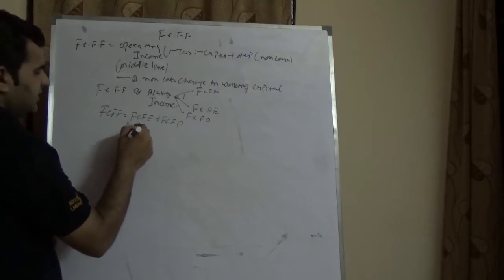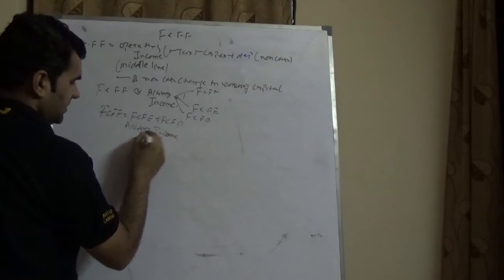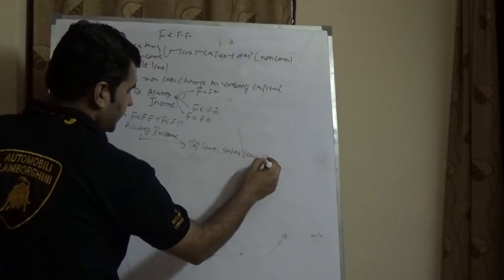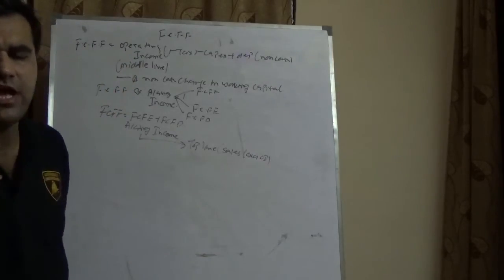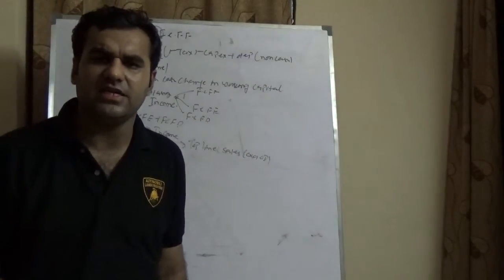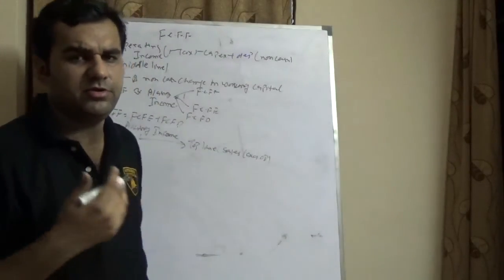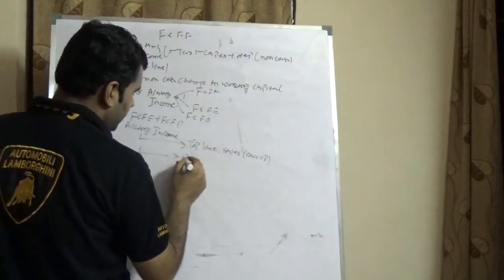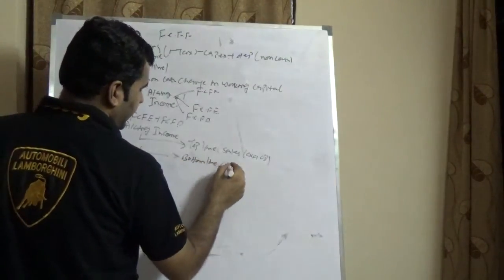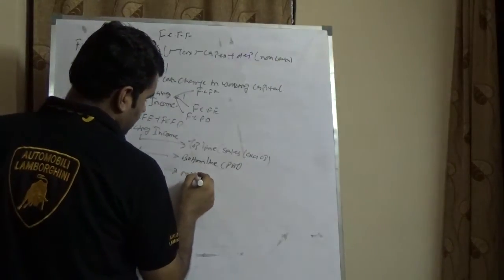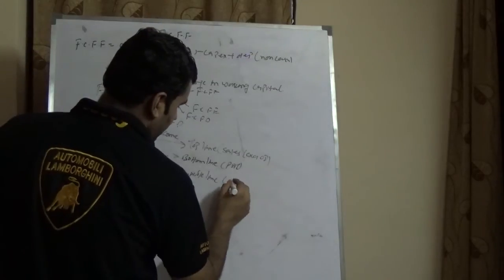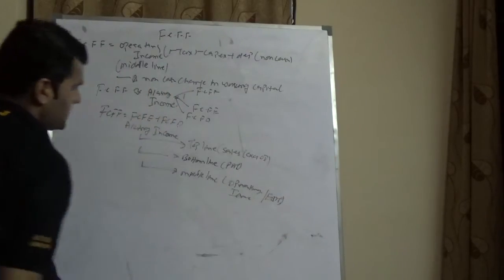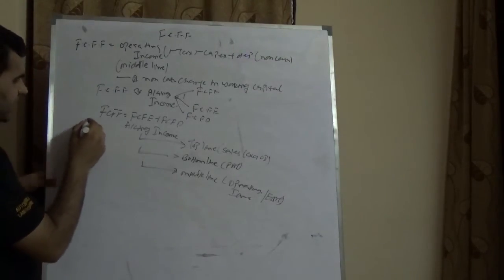Accounting income is further divided into three parts. One is the top line, which is sales — note that this excludes other income. Various companies run their treasury center as a profit center, so we should exclude that while computing the bottom line, which should be purely based on operating income. The second is the bottom line, which is profit after tax. Then you have the middle line, which refers to operating income, also called EBIT.